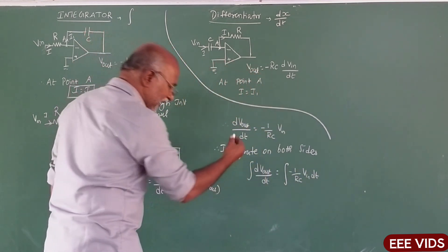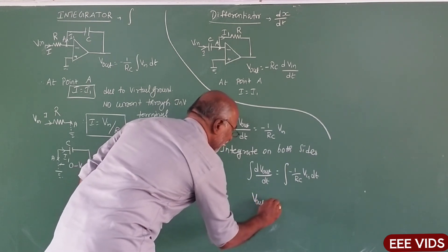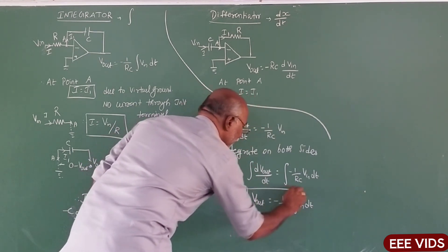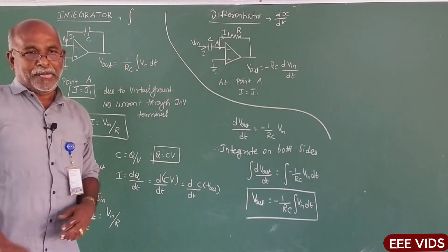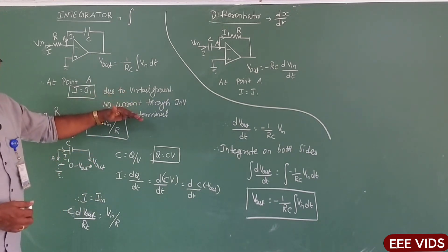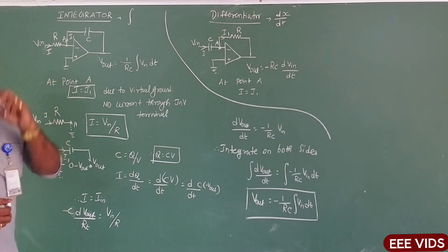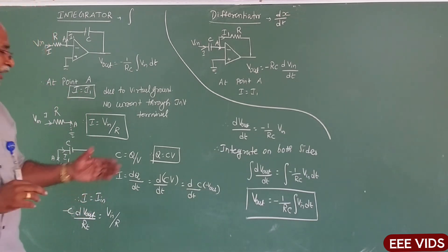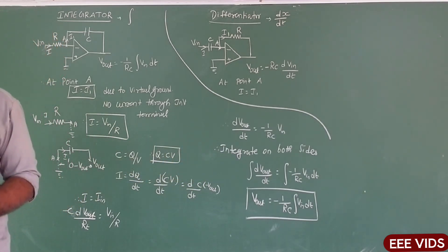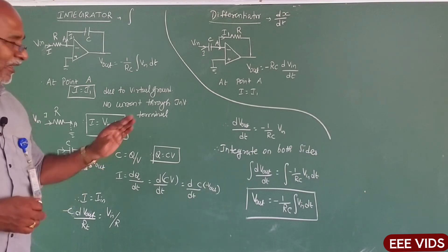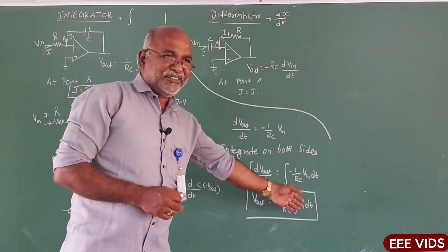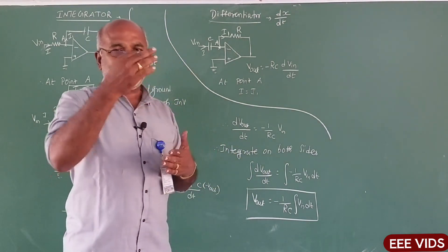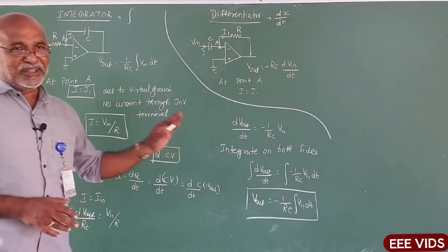Integral of dV out by dt — using the formula integral of DX by DT equals X — gives V out, which is equal to minus 1 by RC, integral of V in into dt. So, this is the formula to find out the integrator. Main thing: in the capacitor, basic formula C is equal to Q by V, that is Q is equal to C into V. Current is the rate of movement of charge carrier — DQ differentiate gives minus 1 by RC into dt. This is the integrative formula. If we apply V in DC, the integral of constant is constant. The voltage output increases as RC increases.